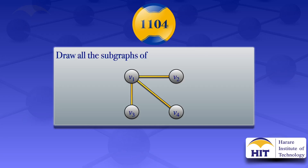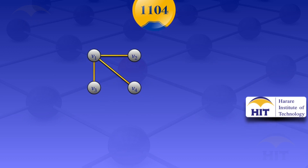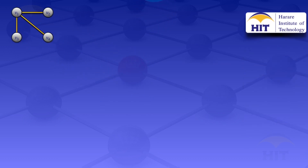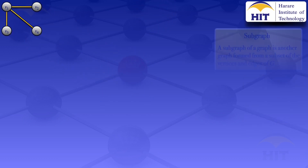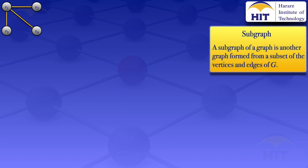In this tutorial, I'm going to draw the subgraphs of the graph that has four vertices and three edges, the graph which is appearing on the screen there. When we are looking at a subgraph, it is another graph that is formed from a subset of the vertices and edges of the given graph G. So in this case, we are looking at graphs that are formed from subsets of vertices and edges of G.